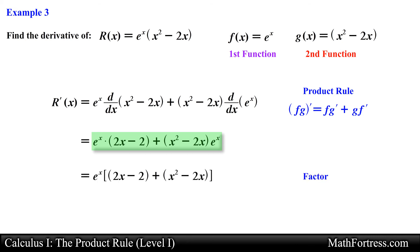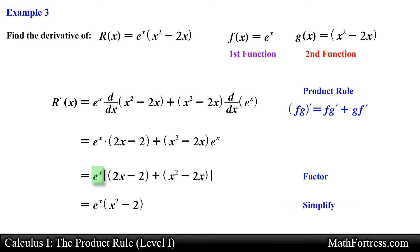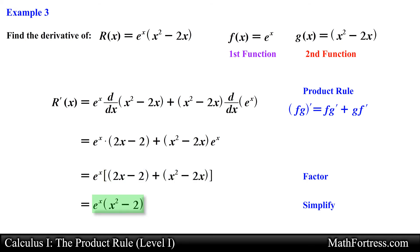Here we can factor out an e to the x term, which leaves us with the following. Then it is just a matter of simplifying the expression inside the brackets. Doing that yields the final derivative equal to e to the x times the quantity x squared minus 2.